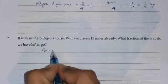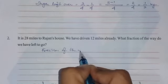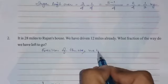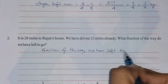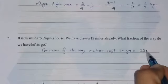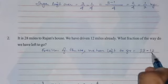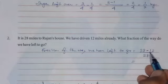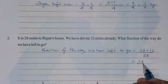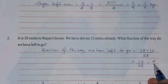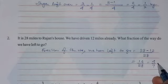So fraction of the way we have left to go. You can see that total distance is 28 miles, out of which 12 miles already driven. Out of total distance, that is 28 miles, it means 28 minus 12. You will get 16 out of 28. As both numbers are divisible by 4, so 4 fours are 16 and 4 sevens are 28. This gives us 4/7 miles we have to go yet.